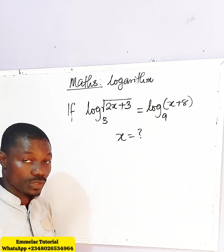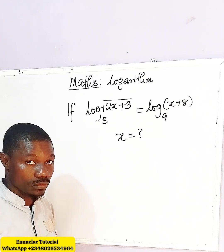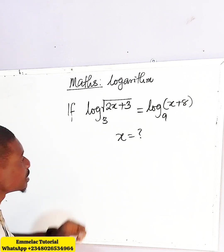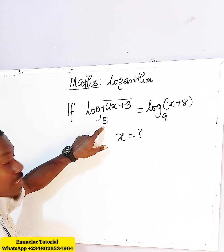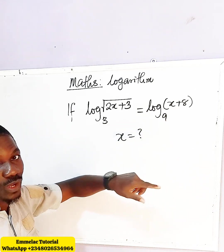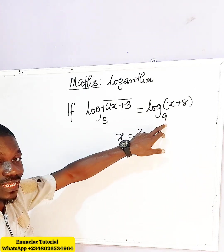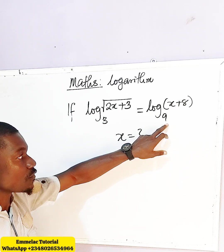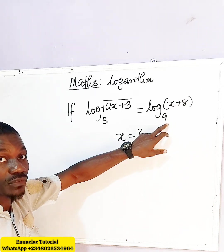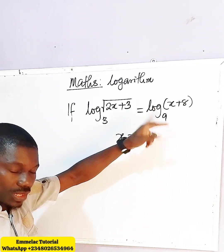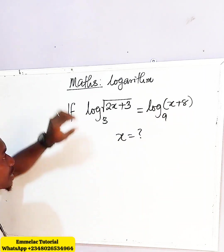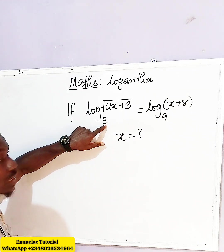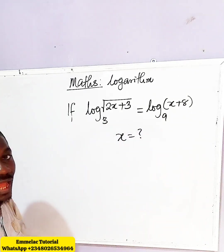We can resolve this in two ways, but I'll choose to make 3 a base of 9. You can either make 9 a base of 3 by reducing it to 3 raised to the power of 2, but in this case, I want to raise 3 to a base of 9. How do we do that?